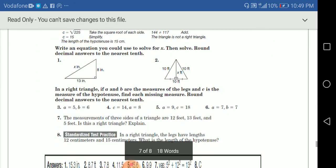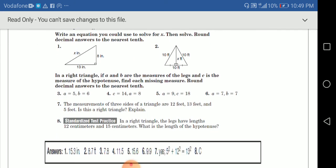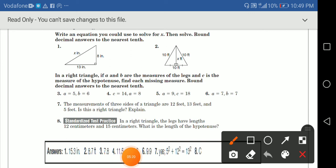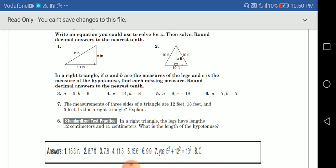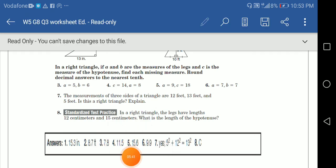And I hope this is clear, guys. Let's solve together. I have here, write an equation you could use to solve for x. Then solve, round to the nearest decimal answers. To the nearest tenth. We got here, this is the hypotenuse, which is x power 2 equal 8 power 2 plus 13 power 2. I need you to complete this exercise as homework. And if you have any problem in it, please send me.